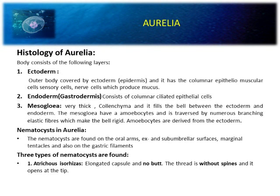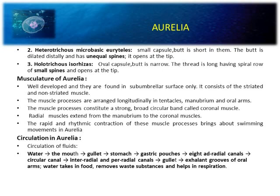Nematocysts in Aurelia are found in oral arms, ex- or sub-umbrellar surface, marginal tentacles, and gastric filaments. Three types of nematocysts are found. First is atrichous isorhiza — an elongated capsule with no butt, thread without spines, open at the tip. Second is hetrotrichous microbasic euryteles — a small capsule with very short, dilated distal end and unequal spines. Third is holotrichous isorhiza — an oval capsule with very narrow bore, small spines on threads, open at the tip.